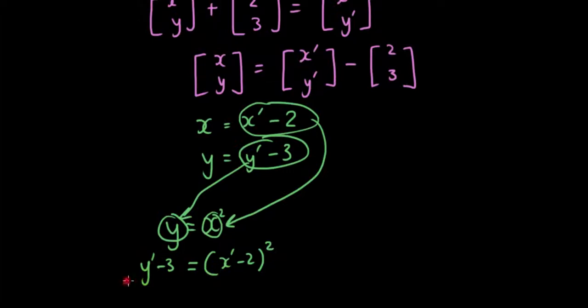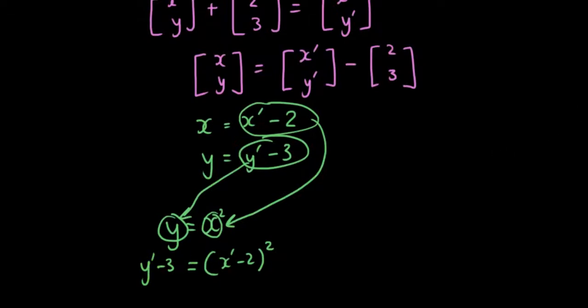And now I have an equation that relates x' to y'. So now if I expand it out and I move everything to one side except y', y' equals x' minus 2 squared plus 3. I can expand it out if I want.